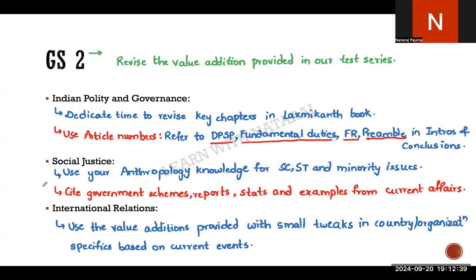Since polity carries the highest weightage — close to 125 marks — do a quick revision of Lakshmikant or your short notes. When reading, avoid getting into the nitty-gritties like you did for prelims. Focus on broader topics: judicial independence, judicial activism, the legislature, the executive, separation of powers — how one wing checks the other.